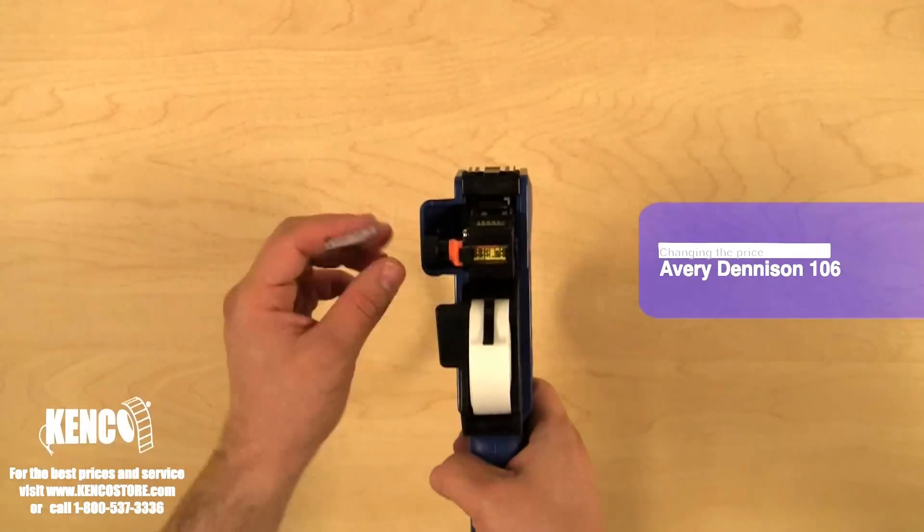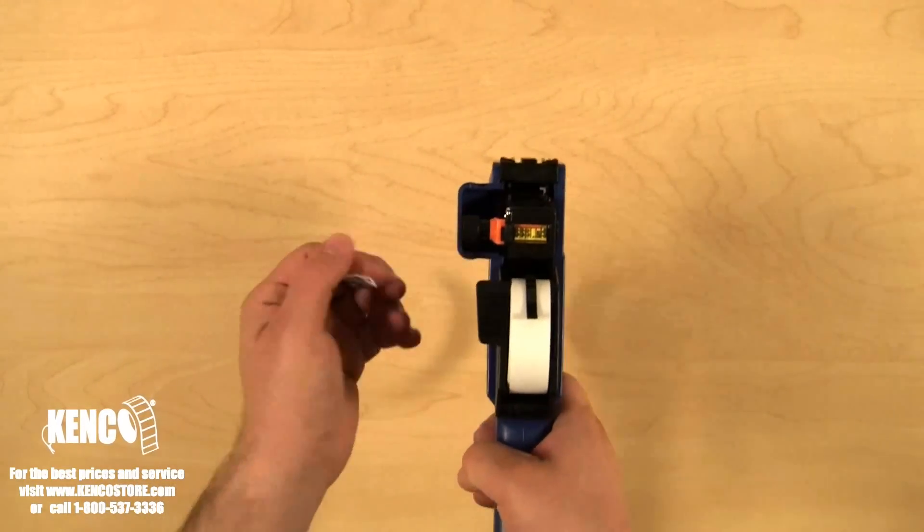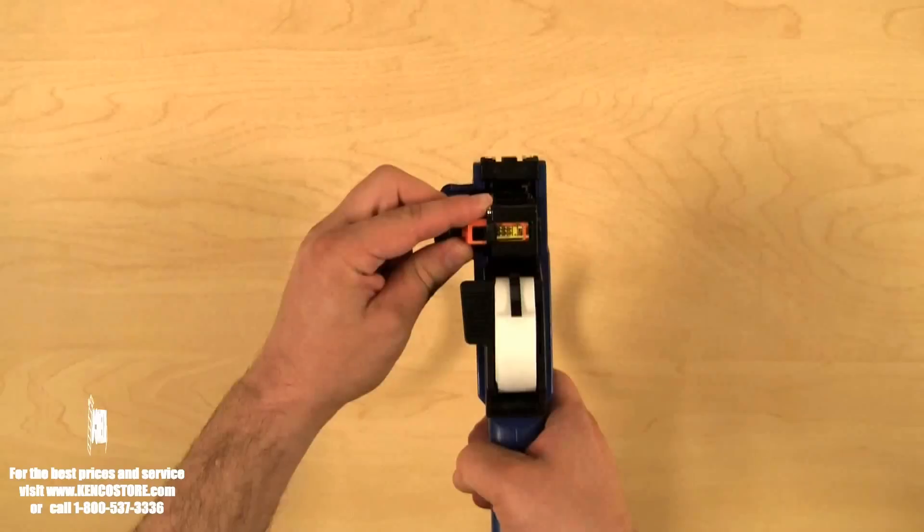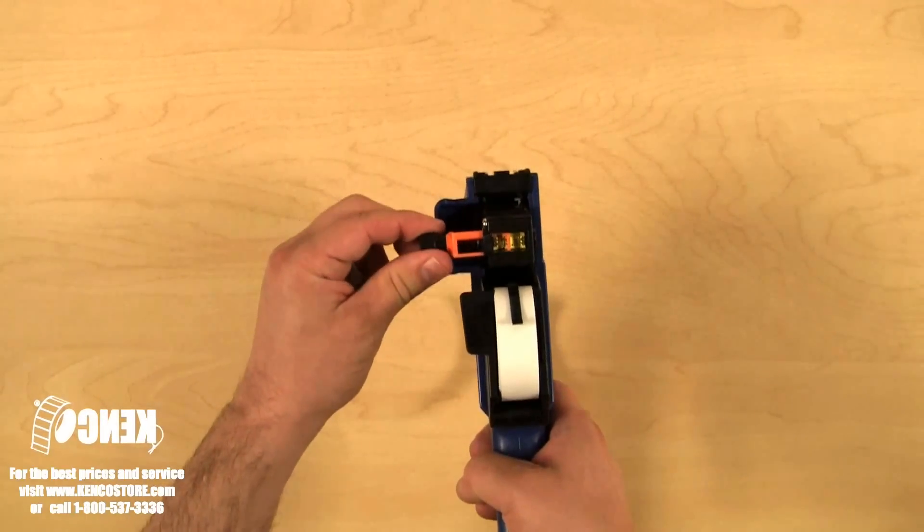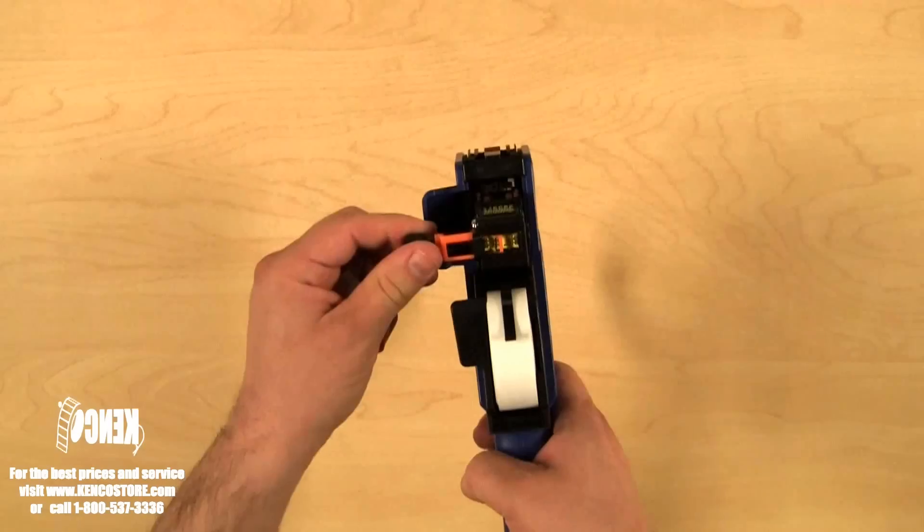To change the price, simply pull on the guide to the location that you want to change and advance it forward or backwards.